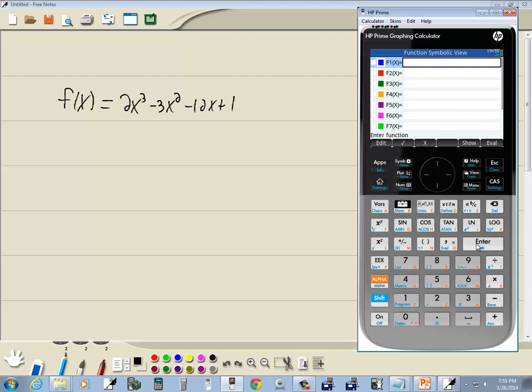We'll go backspace, delete out what's there. Then we've got 2x, then x to the y button, third power.